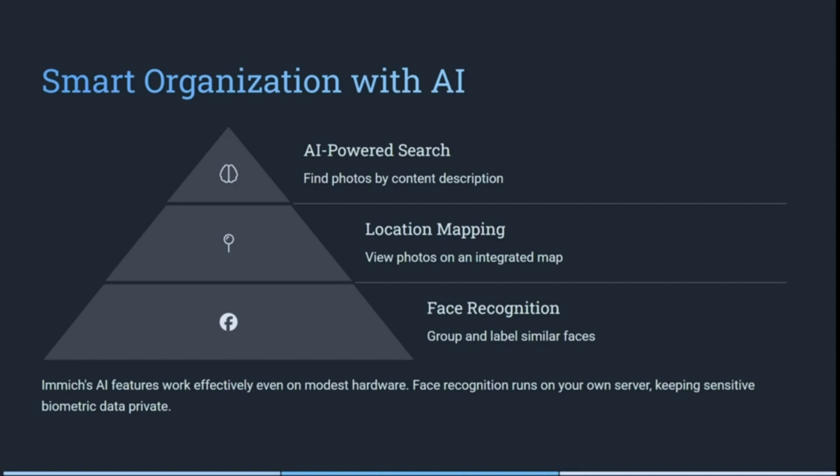You can view photos on an integrated map, and it also has face recognition, so you can group and label similar faces or particular faces, name them, and have everything in a very organized fashion. It works effectively on modest hardware, and the face recognition runs on your own server, keeping sensitive biometric data private.